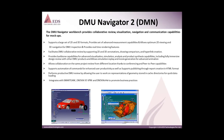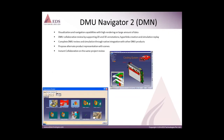It performs productive DMV review by allowing users to work on representations of geometry stored in a cache directory for quick data loading. It integrates with Smartame, Innovia VPM, and Innovia VPM V4 to promote business practices with the help of PLM. It provides visualize and navigate capabilities with high rendering on large amounts of data, and supports DMV collaborative review with 2D and 3D annotations. These are the capabilities available with DMV Navigator.